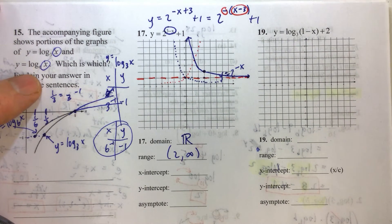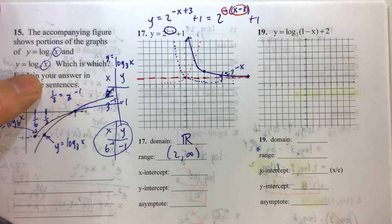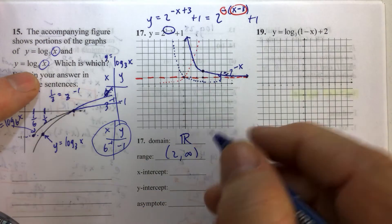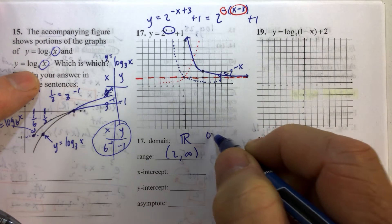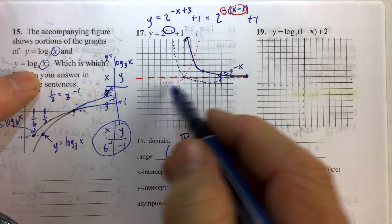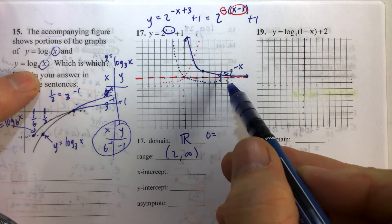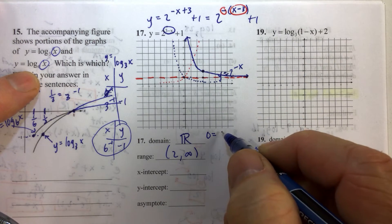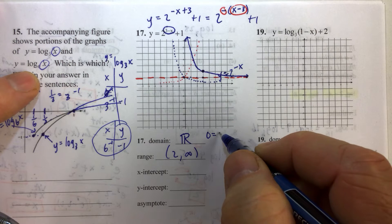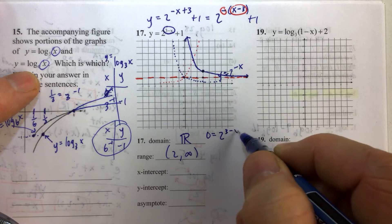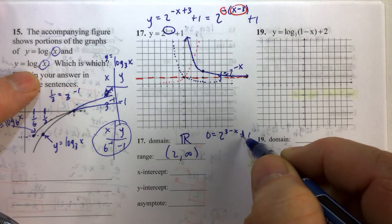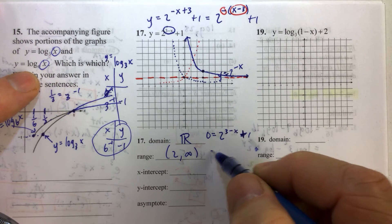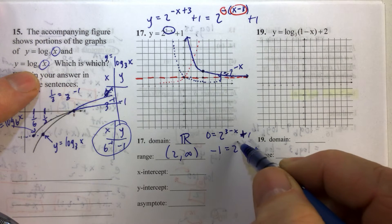The x-intercept: now if we set y equal to 0, we should be able to see on our graph that there is no x-intercept. So we should not be able to solve the following equation. We have 0 equals 2 to the 3 minus x plus 1. Now if we subtract 1 from both sides, then we get negative 1 equals 2 to the 3 minus x.